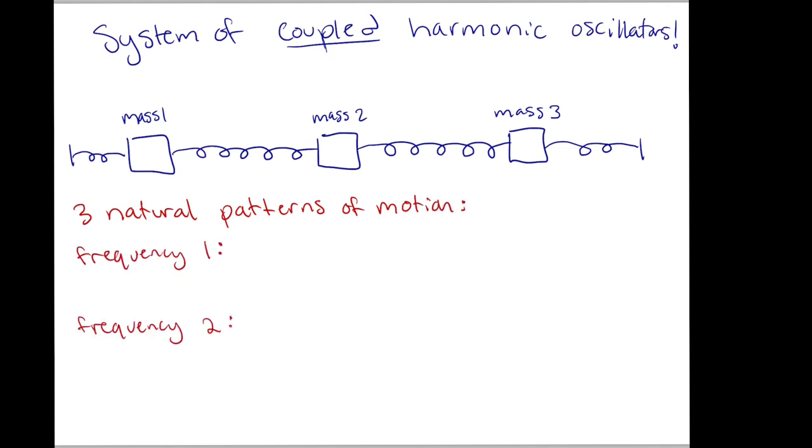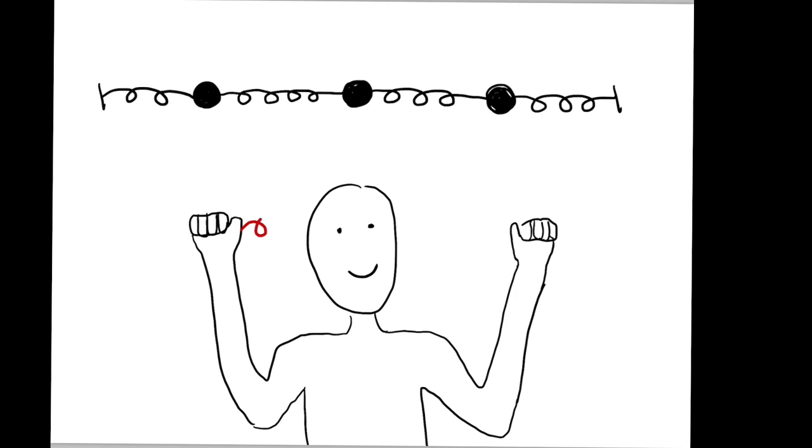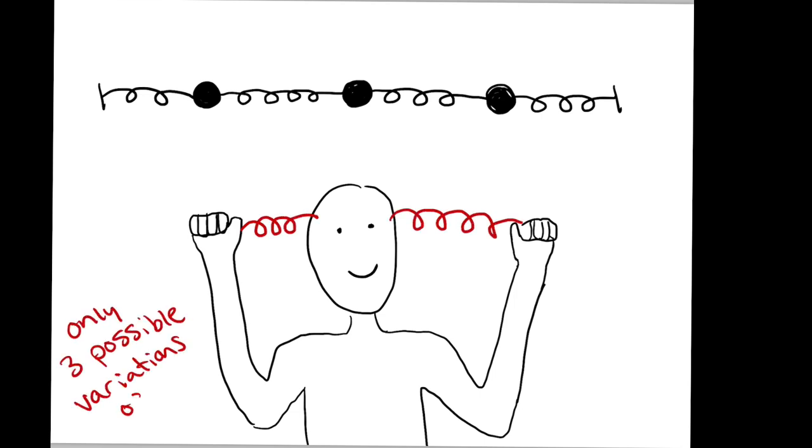Each natural frequency of a system has a unique pattern of motion associated with it. So how does this relate to TikTok dances? Well, many TikTok dances look a lot like simple harmonic motion, like a pendulum or a spring. So if you've got three body parts oscillating in a spring-like motion — say your head and your two hands — there will be three types of movement, just like the spring example, that you can follow. If you imagine your head and hands are connected with springs, there are only three variations of the dance move that you can do while still moving to the rhythm of the music.